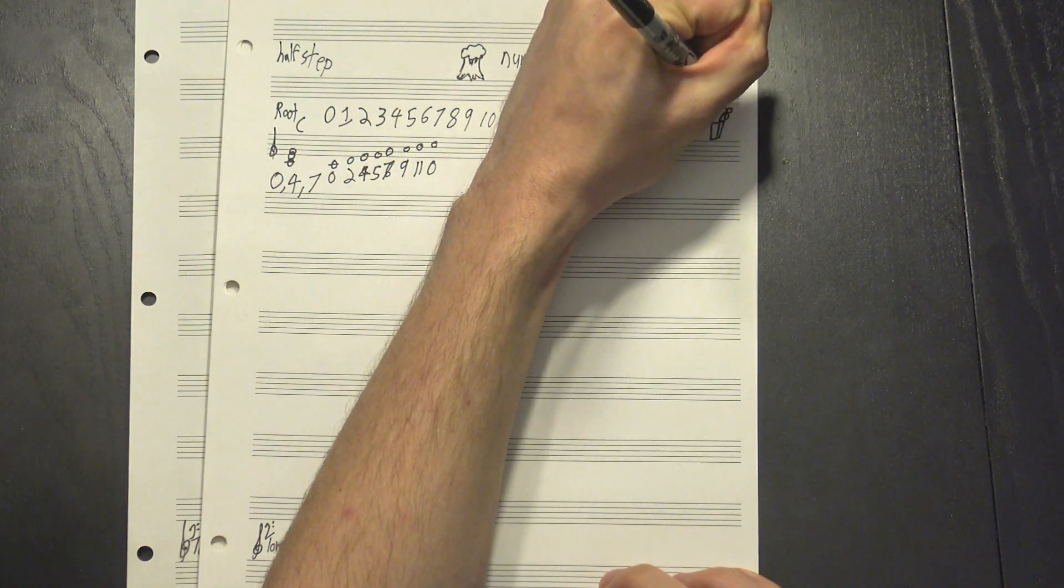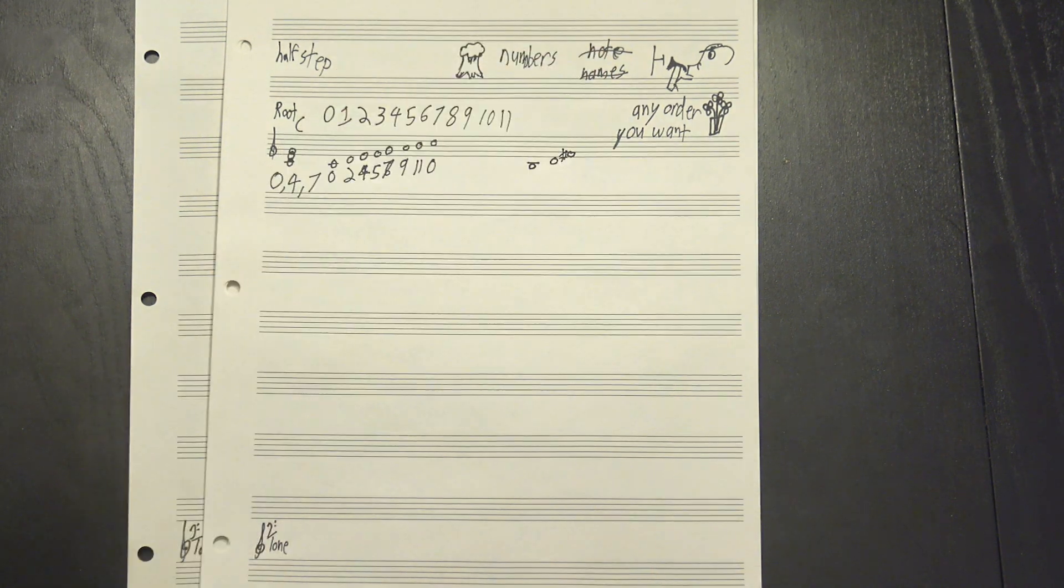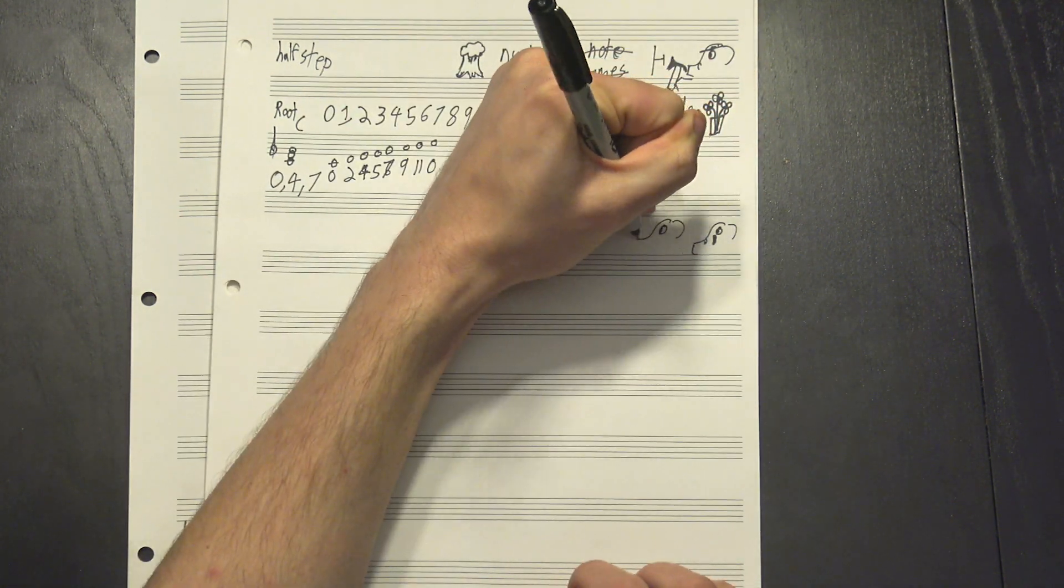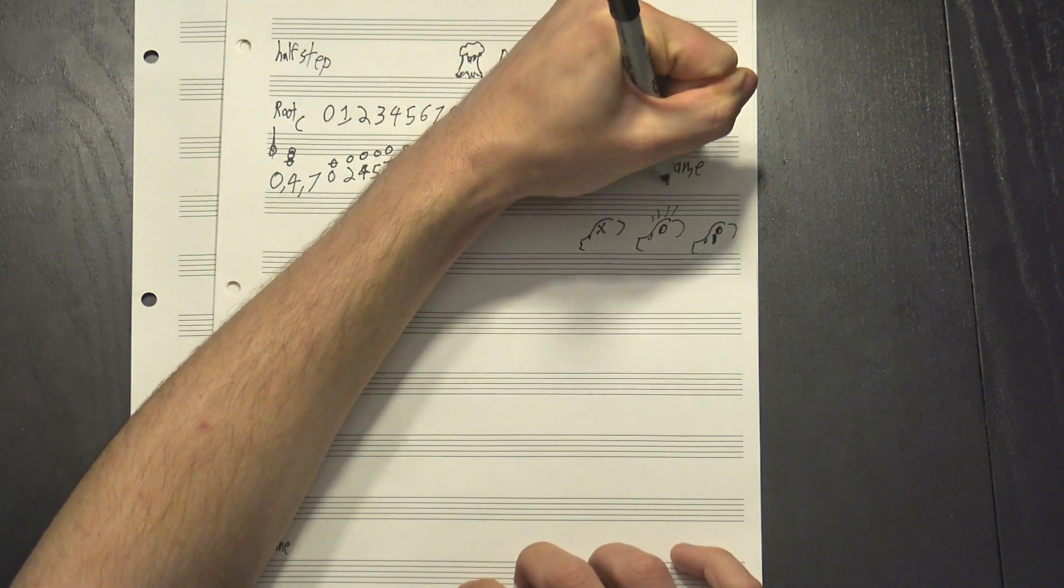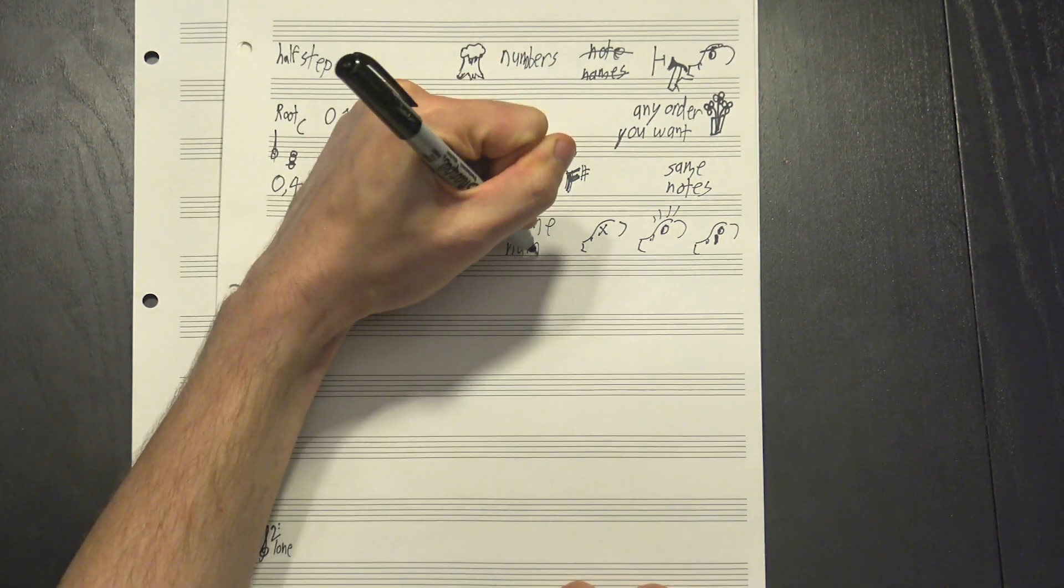And finally, we don't care how the notes are arranged. You can put them in any order you want. All that matters is which ones you're using. For instance, this, this, and this are all the same notes: B, D, and F sharp. Even though they sound pretty different, we can describe them all with the same name.